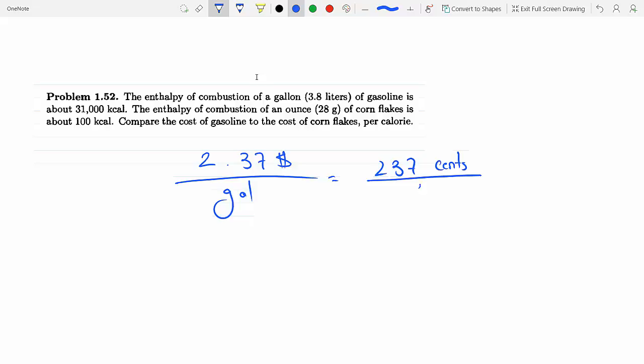Every gallon we are told is 31,000 kilocalories. So that's every one gallon is 31,000 kilocalories, and every one kilocalorie, I'm using dimensional analysis here, is a thousand calories. This is for gasoline.